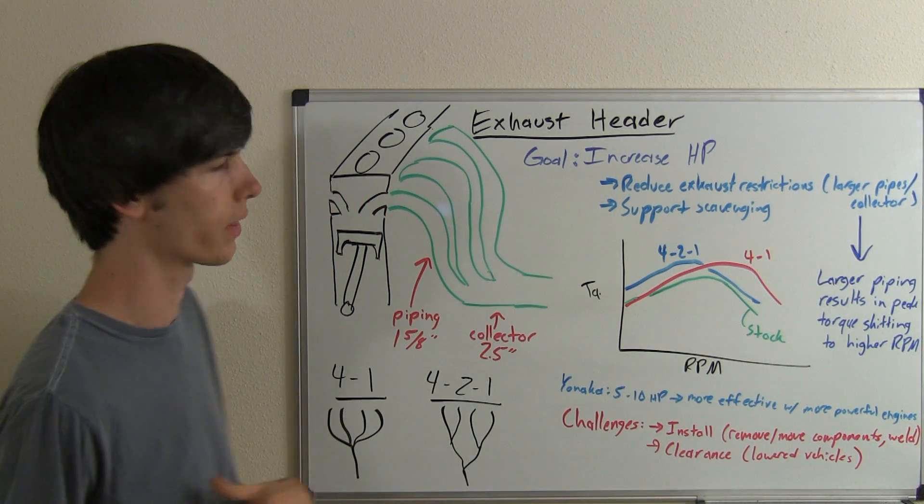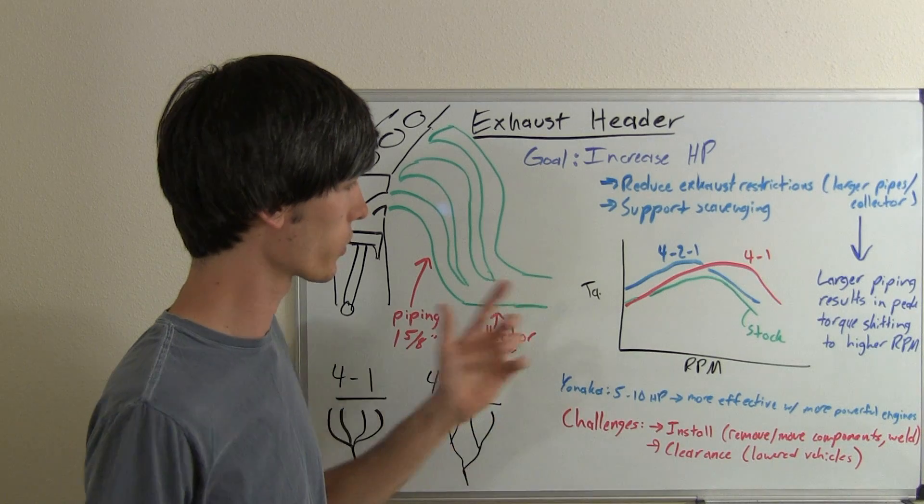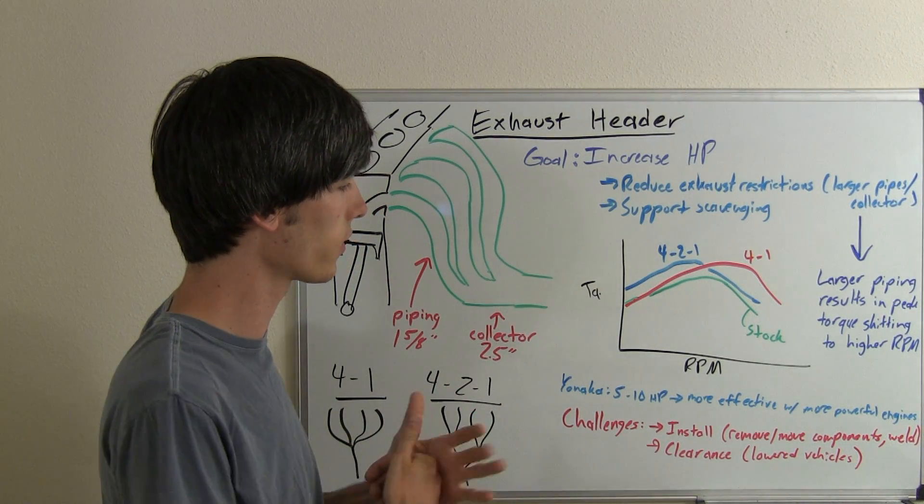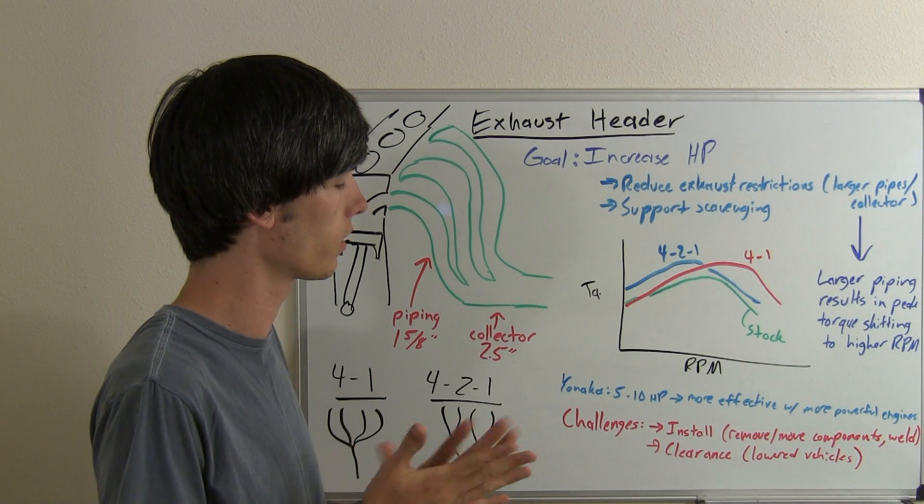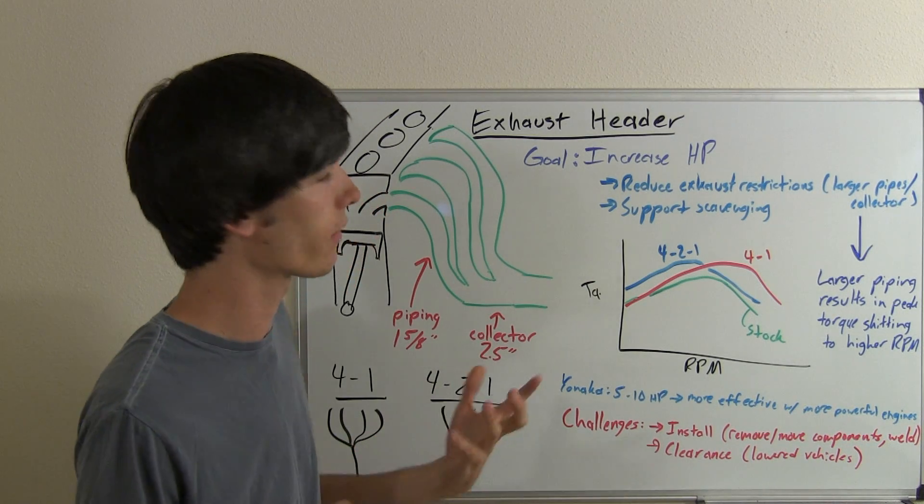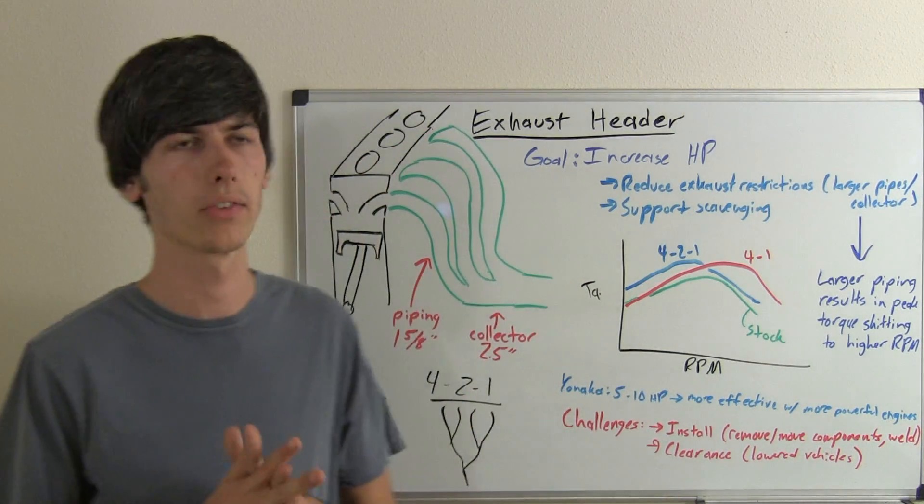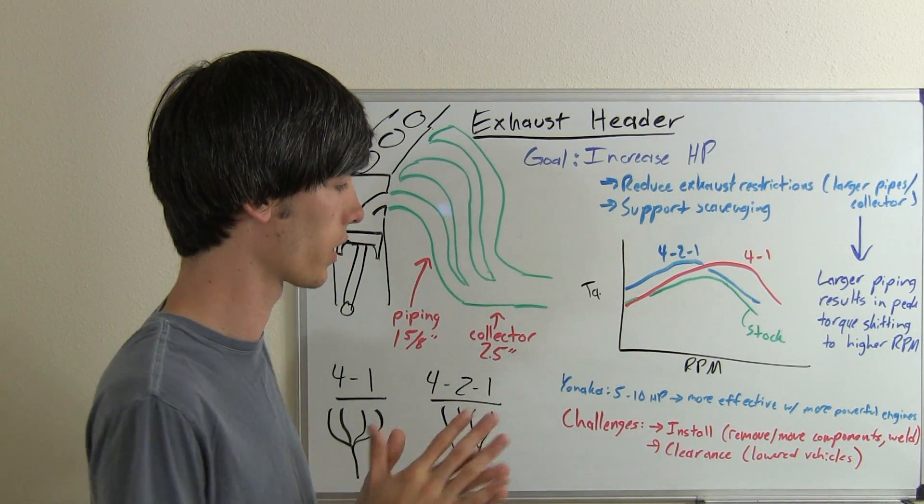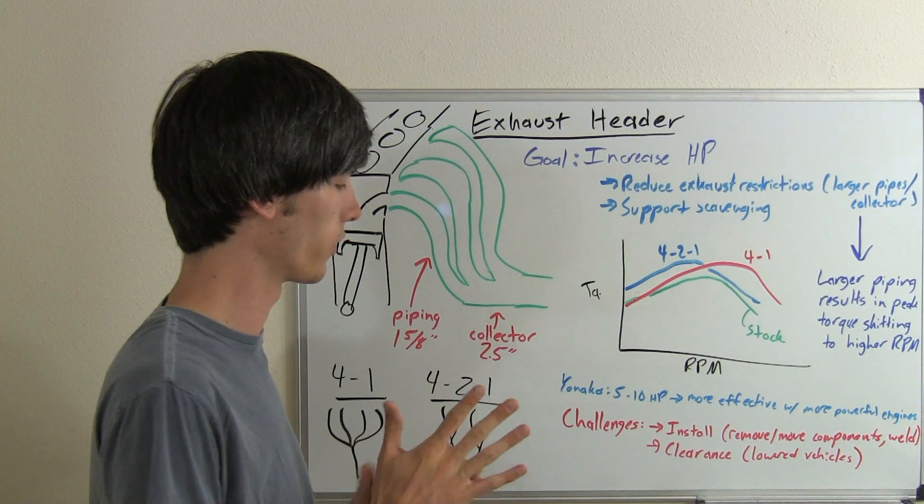Some of the challenges involved with an exhaust header, especially one with longer length pipes, is the install can be a little more complicated where you may have to remove some components, move some components, and also weld the end to the catalytic converter or the rest of the exhaust that you've got going on.